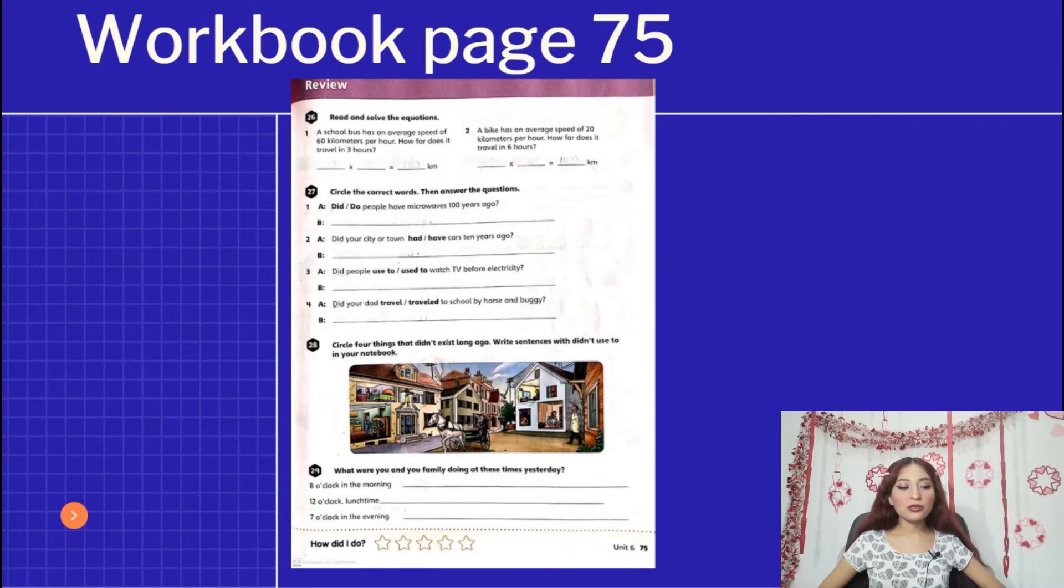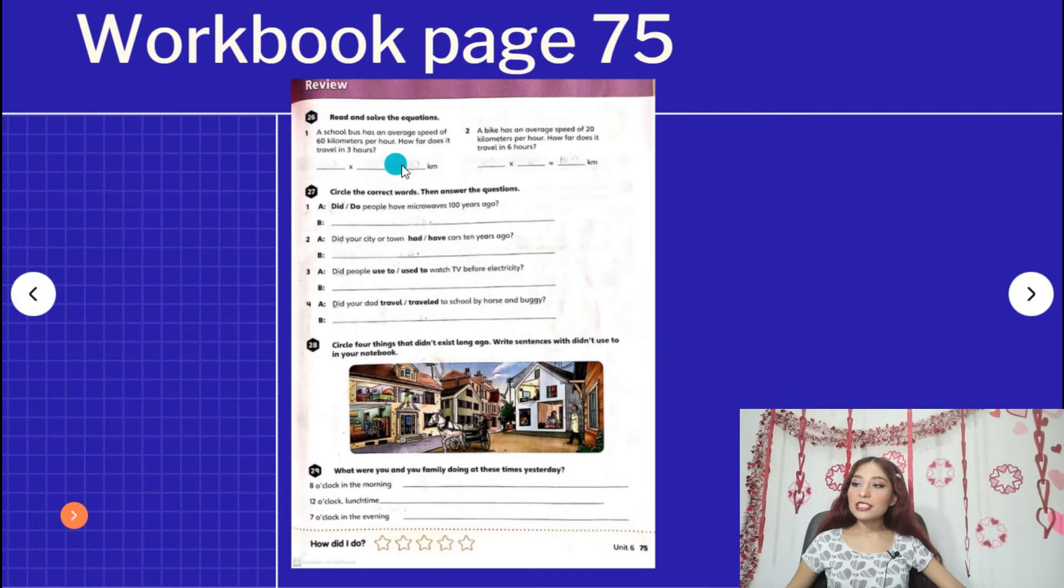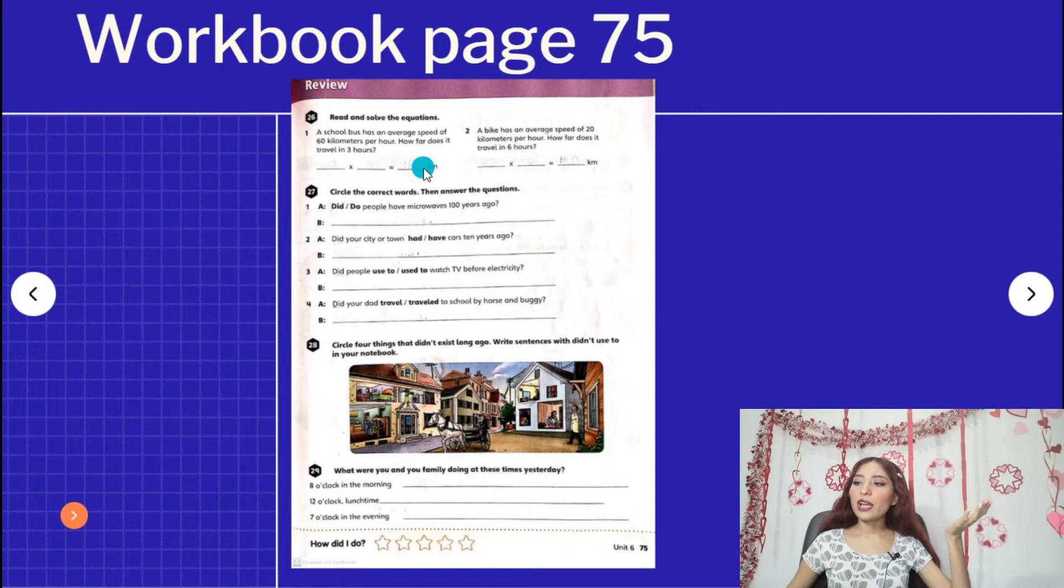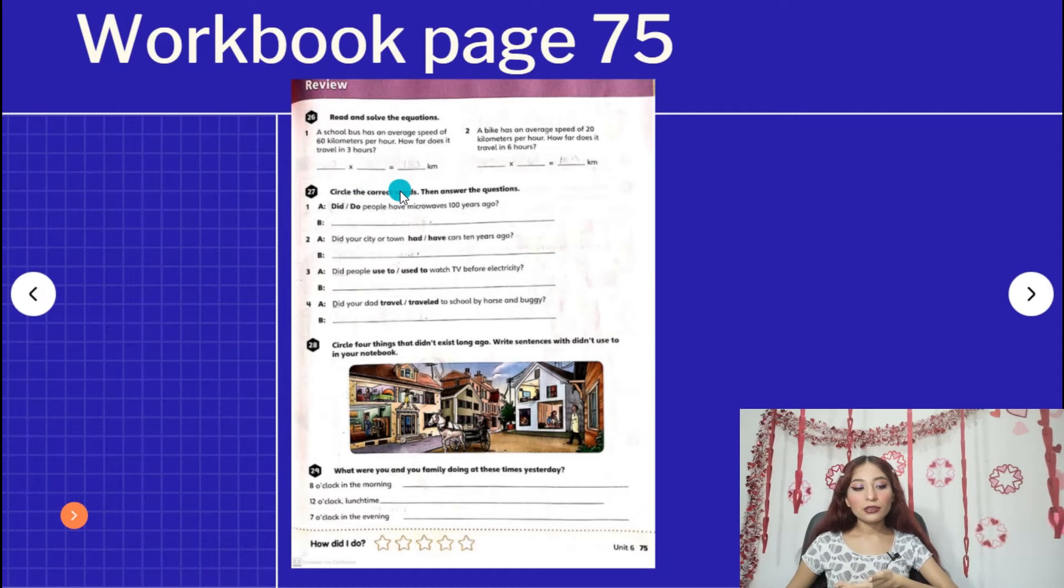We have only one page, it's the last page that we have for this unit. Activity 26 says read and solve the equation. A school bus has an average speed of 60 kilometers per hour. How far does it travel in three hours? So you're going to do a multiplication, 60 for three, and the result is...